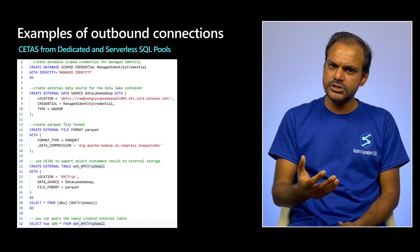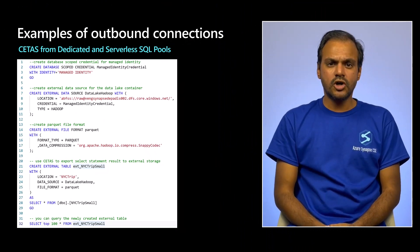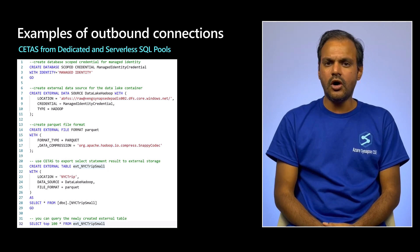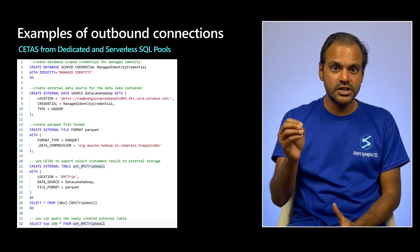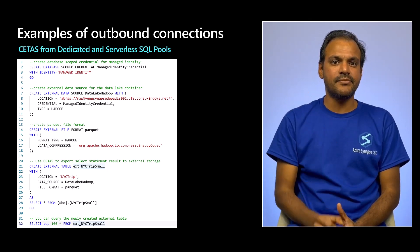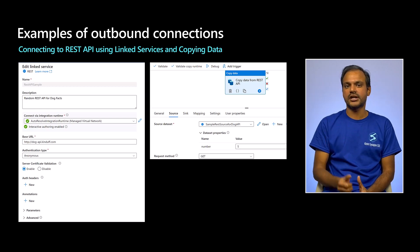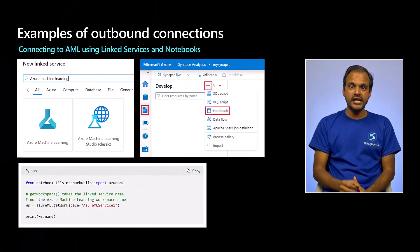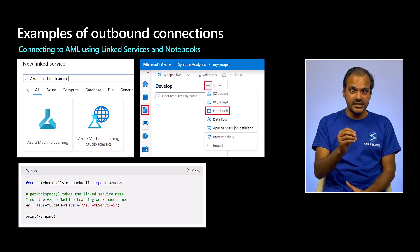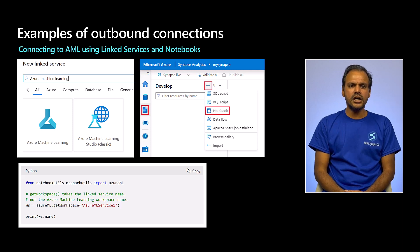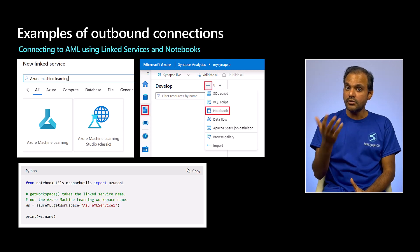Now let's look at some examples for outbound connections. Copying data from a dedicated SQL pool or a serverless SQL pool to an external storage account with the CETAS command is an outbound connection. Connecting to a REST API through a linked service and copying data using that connection in a Synapse pipeline is an outbound connection. Connecting to Azure ML workspace through a linked service and accessing it from a Synapse Spark notebook is an outbound connection. These are only some of the examples, but there could be many more.